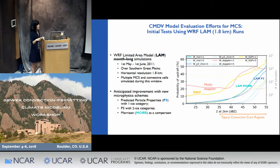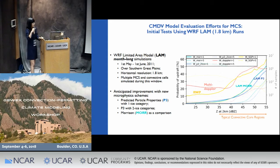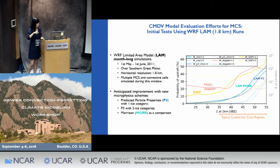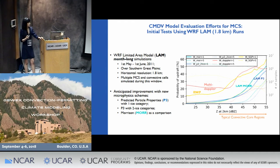The model simulations we are using are a LAM one-month-long run during the MC3E campaign period over the SGP site, at a horizontal resolution of 0.8 kilometers. We have a couple of MCS cases identified during this time window. We ran simulations with three different microphysical schemes: Morrison, P3 new microphysical scheme with one ice category, and P3 with two ice categories, to assess improvements in the microphysics.